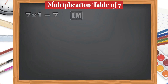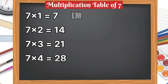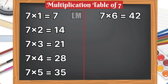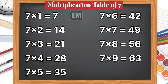Let's learn multiplication table of 7. 7 1s are 7, 7 2s are 14, 7 3s are 21, 7 4s are 28, 7 5s are 35, 7 6s are 42, 7 7s are 49, 7 8s are 56, 7 9s are 63, 7 10s are 70.